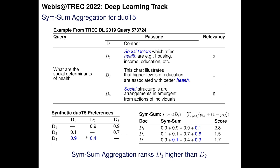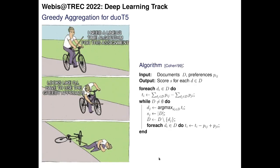When we look at the preferences between D3 and D2 in isolation, Duo T5 would produce a different order — it says D3 is only more relevant than D2 with 30%, but D2 is more relevant than D3 with 70%. So when looking at just the two documents, Duo T5 would rank D2 higher than D3. But the symmetric sum aggregation ranks D3 higher than D2. We want to find a solution for this.